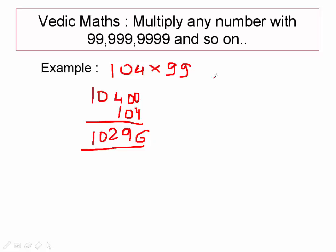Now let us understand how this thing works. Suppose you want to multiply with 99, and 99 can also be written as 100 minus 1.